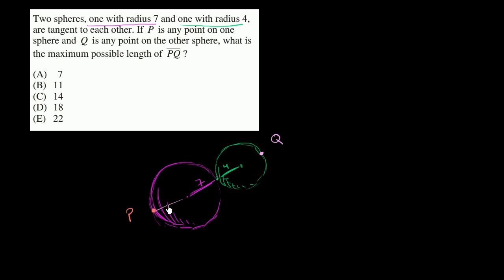And I would stick Q all the way over there on the other circle. So the distance between them is going to be essentially the sum of the two diameters. So 14 plus 8 is equal to 22.